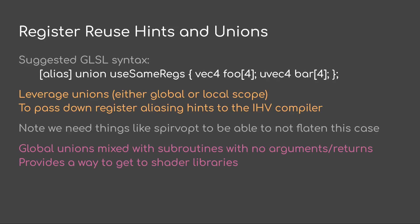We'd want these in global and local scope, and we'd want the hints to go down to the IHV compiler — meaning things like SPIR-V would need to be modified so they don't flatten and remove this. Also note that global unions mixed with subroutines with no arguments or returns would provide a great way to get shader libraries to work, because there's no ABI and thus no call stacks and none of that de-optimization stuff — just pure fast libraries.